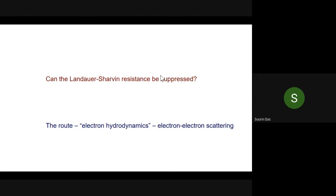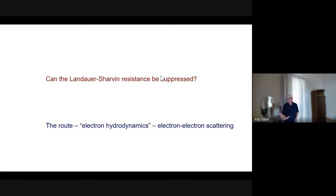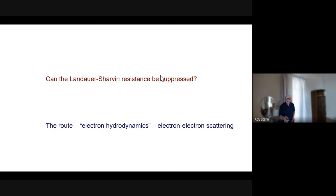Question: Is the symmetry between contacts fine-tuned, or does theory require it to be symmetric? The symmetry is not essential. In fact, the main case I'll talk about — the Corbino case — is very much non-symmetric. Here, the sample is symmetric and there is very little contact resistance beyond the Landauer-Sharvin resistance, so it comes out symmetric, but there's no law of nature requiring it.